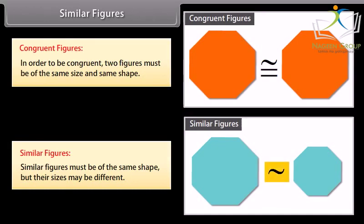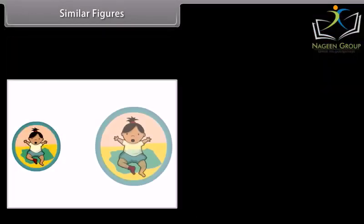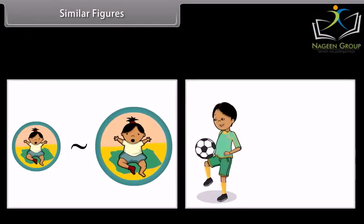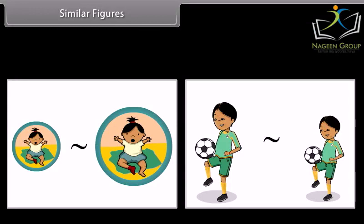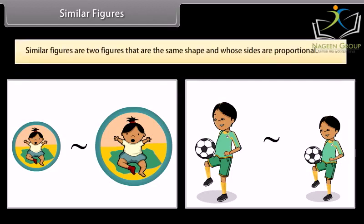This is the symbol that means similar. When you have a photograph enlarged, you make a similar photograph. A photograph can also be shrunk to produce a slide.